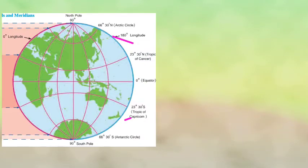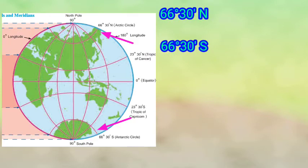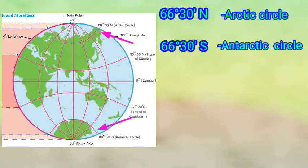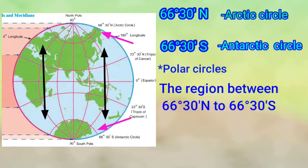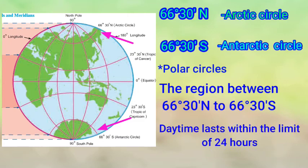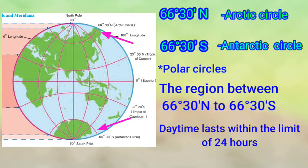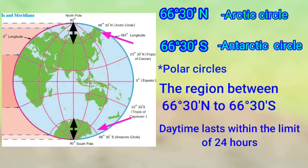Next: 66°30' North and 66°30' South, known as the Arctic Circle and Antarctic Circle respectively — also called the Polar Circles. The region between 66°30' North and 66°30' South has daytime within 24 hours throughout the year. However, in the regions from 66°30' North to 90° North (the North Pole) and 66°30' South to 90° South (the South Pole), daytime can exceed 24 hours depending on the season.